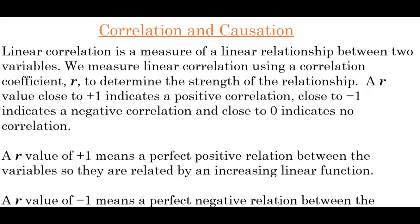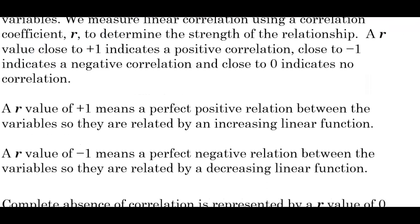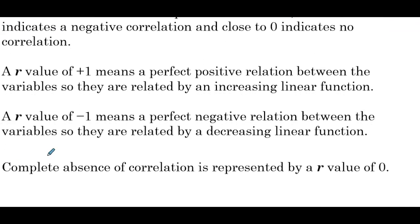An r value of positive 1, a correlation coefficient of positive 1, means the data points form a perfect line, and that line would have a positive slope. An r value of negative 1 means a perfect negative relation between the variables, so they are related by a decreasing linear function. A correlation coefficient of negative 1 means all the data points form a perfect line, but this time that line has a negative slope. The complete absence of correlation is represented by an r value of 0 — if the correlation coefficient is 0, that means the points are completely random and no linear relationship exists.